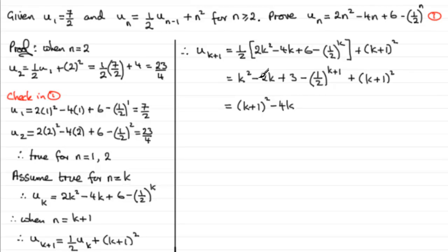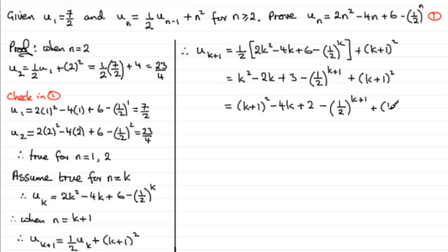Expanding (k plus 1) squared also gives the 1 squared term, so I need plus 2 to make it up to 3. So all of that is the same as k² minus 2k plus 3 when worked out. The minus one-half to the power k plus 1 term is looking good since we want (one-half)^(k+1). Tidying up, we have two lots of (k plus 1) squared.